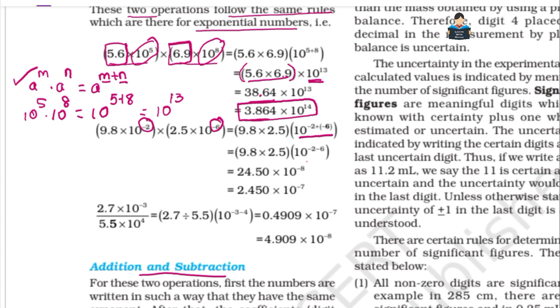We have to add the minus signs, so we get 10^(−2 + (−6)) = 10^(−8). This is the ordinary decimal multiplication result.